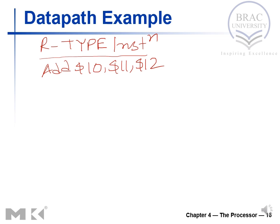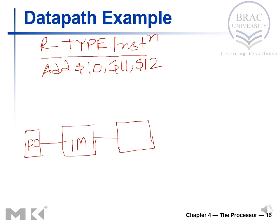The first thing we need in the data path is a program counter. So we need a PC, and from the PC this goes to the instruction memory. From instruction memory this goes to the register file, and from the register file this goes to the ALU. This is the basic diagram.